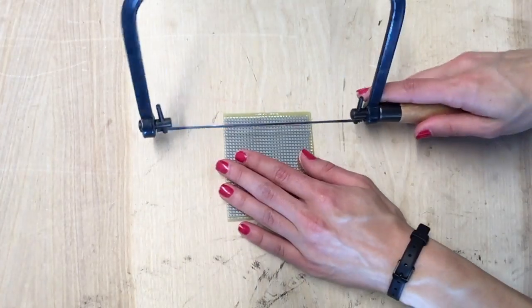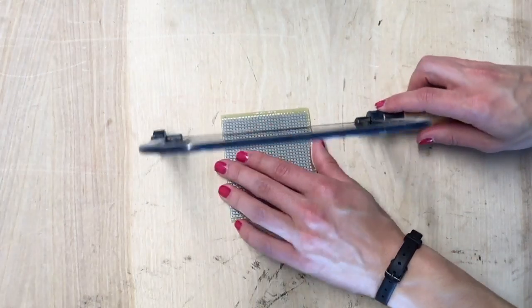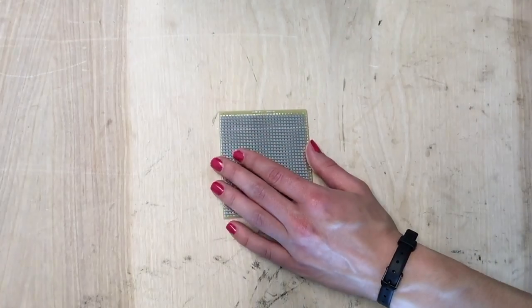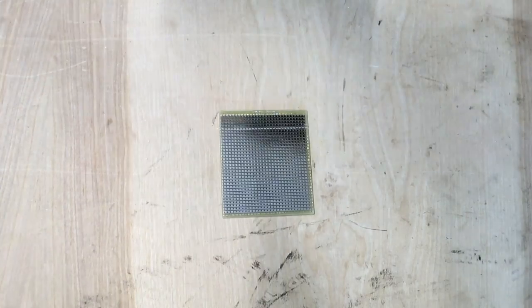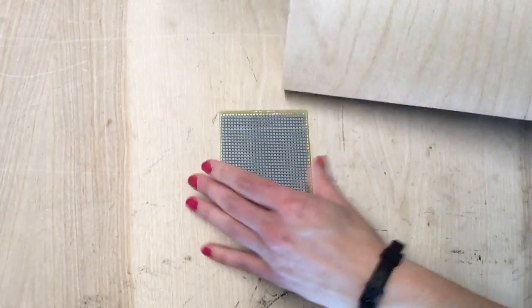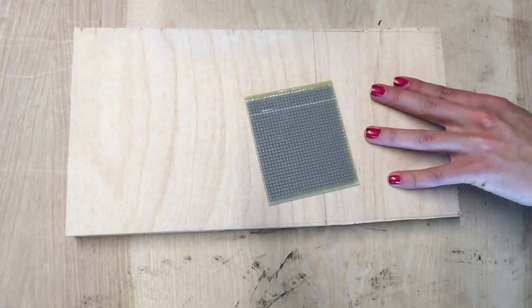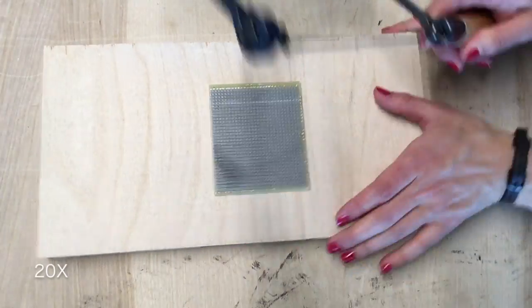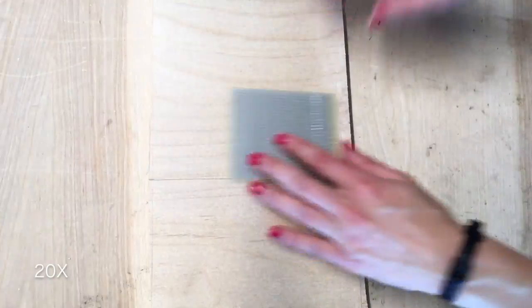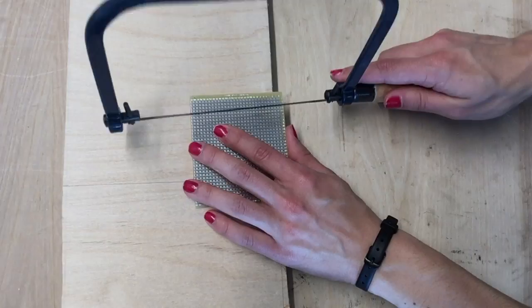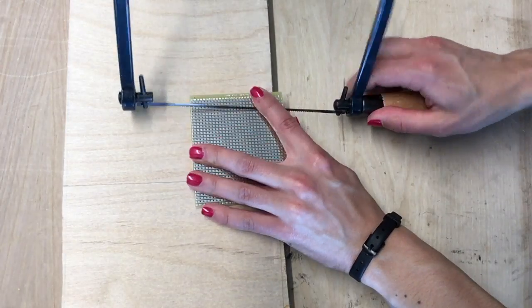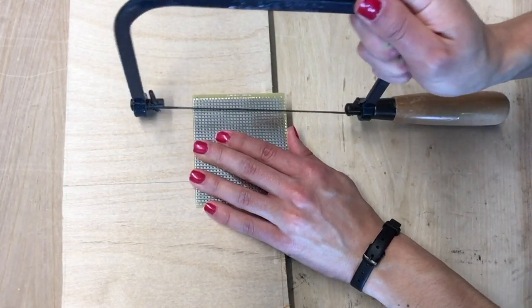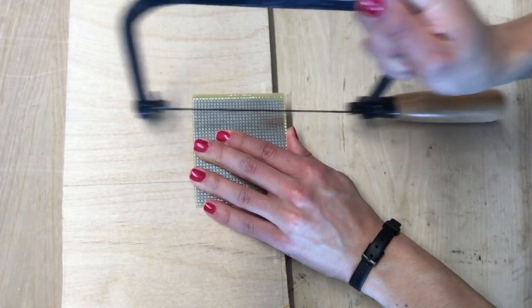After this, use a saw to initiate the real cutting process. You can use a wooden block to support the cutting process. Also, you will want to saw exactly on the trail you have marked. Just like this.